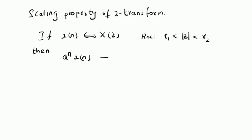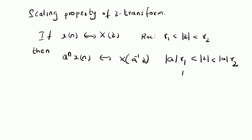The Z-transform of a^n times x of n is given by X of a⁻¹z. The corresponding ROC is given by mod(a) multiplied by R1 less than mod z less than mod(a) multiplied by R2. Here the value 'a' is basically a constant — it can be a real number or a complex number.